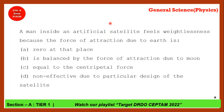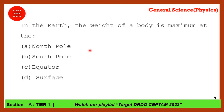A man inside an artificial satellite feels weightlessness — why? The options include: force of attraction due to earth is zero at that place, balanced by force of attraction due to moon, equal to centripetal force, or non-effective due to satellite design. The correct answer is option A: the force of attraction is zero at that place, so the man inside the satellite experiences no force and feels weightlessness.